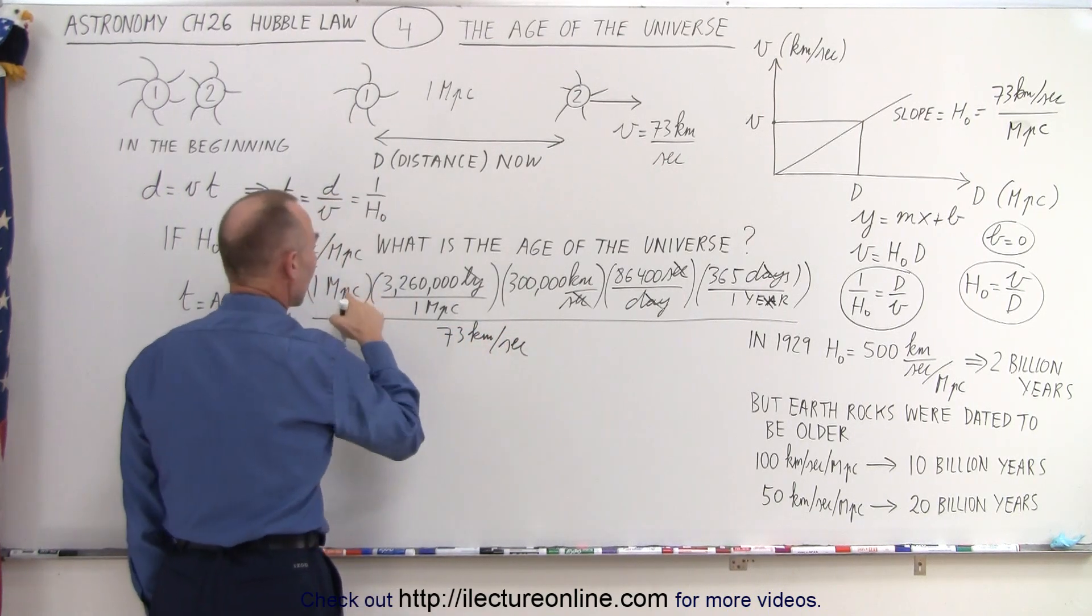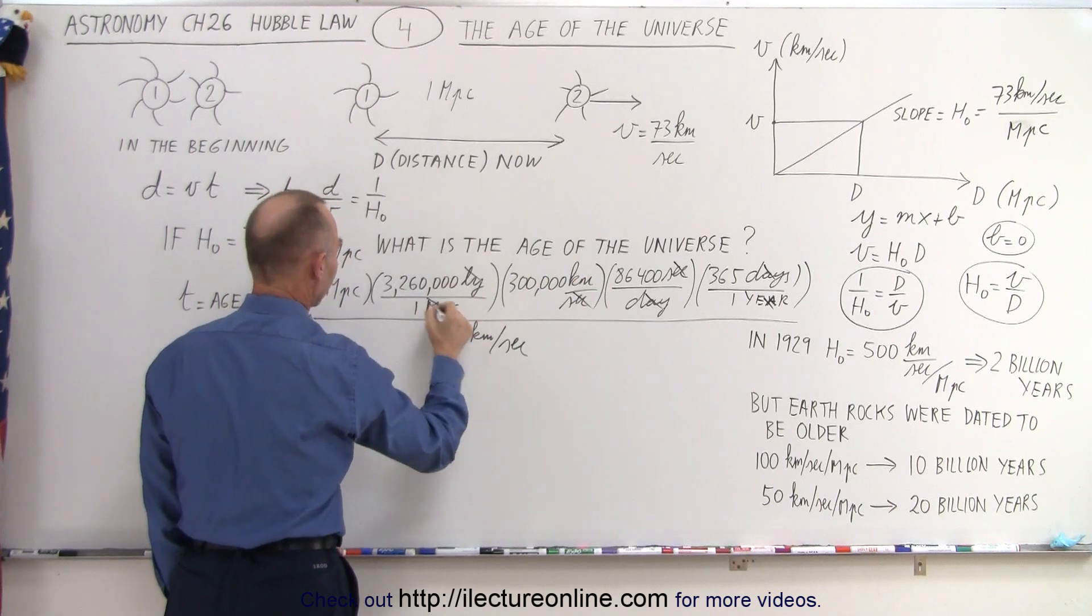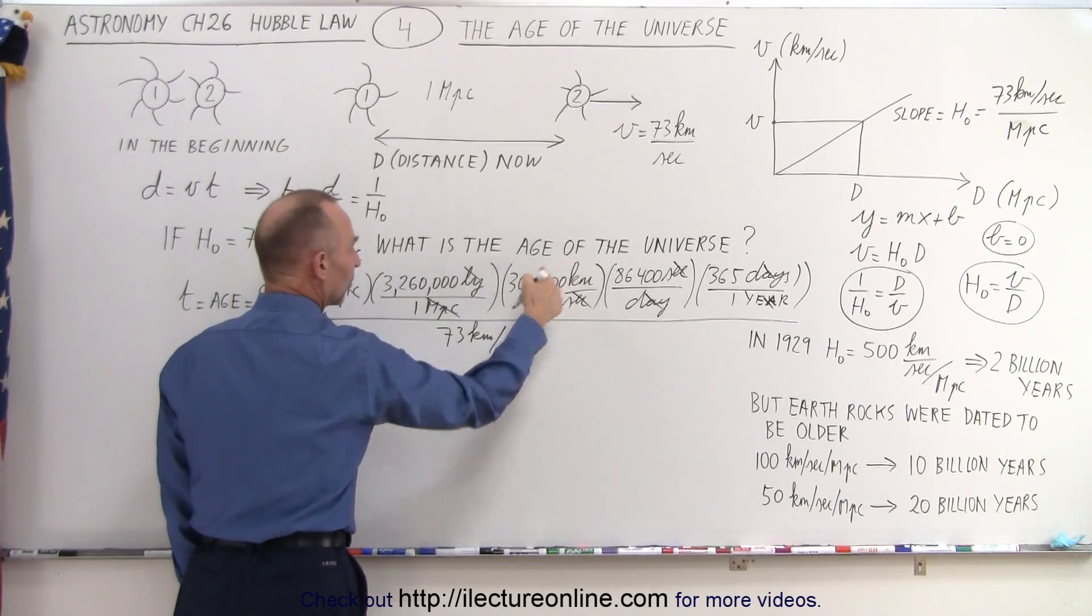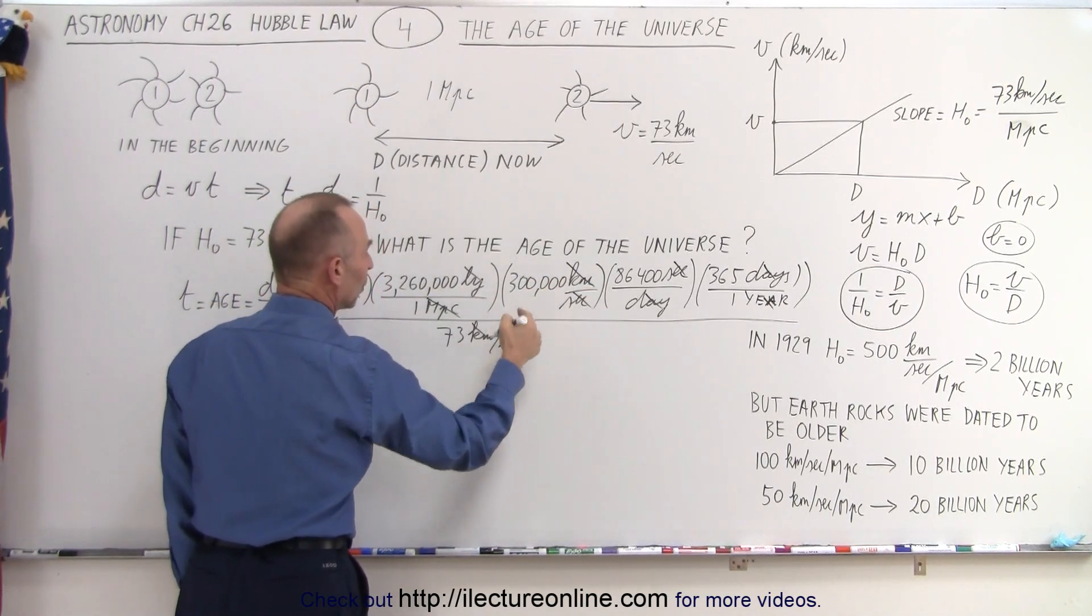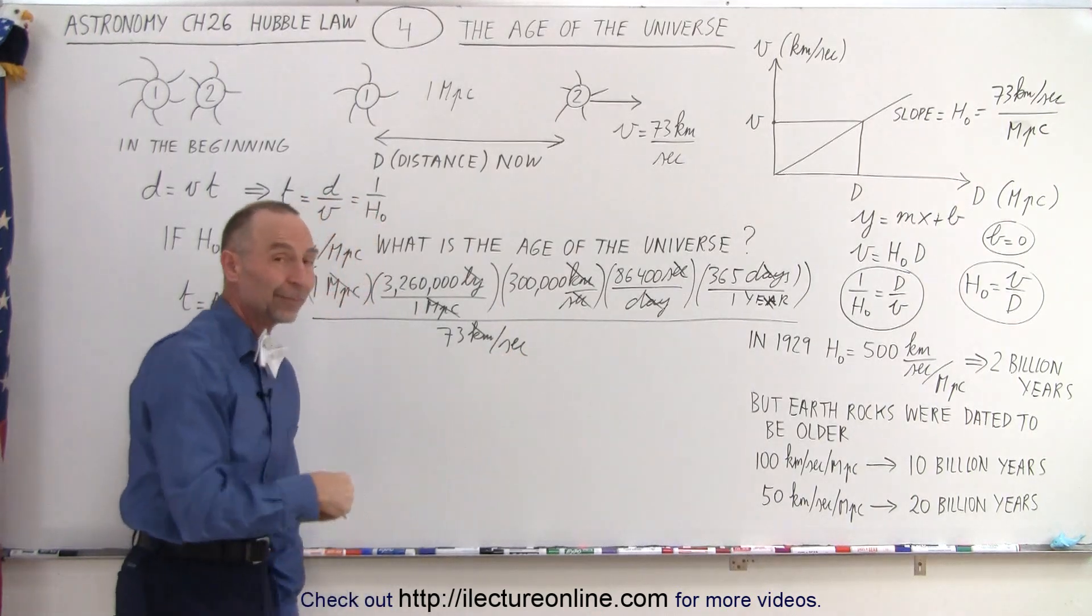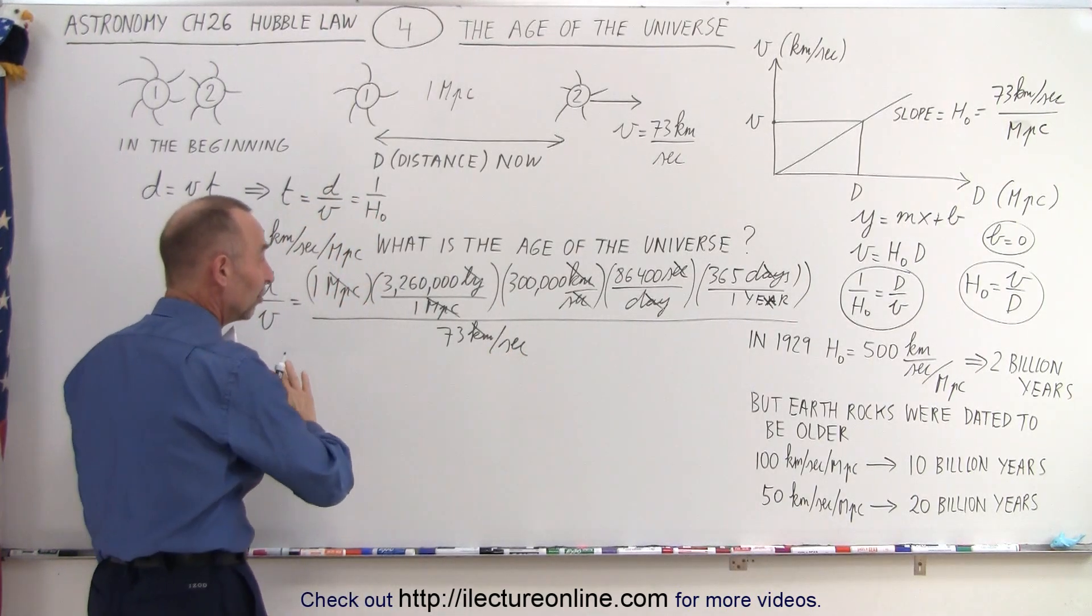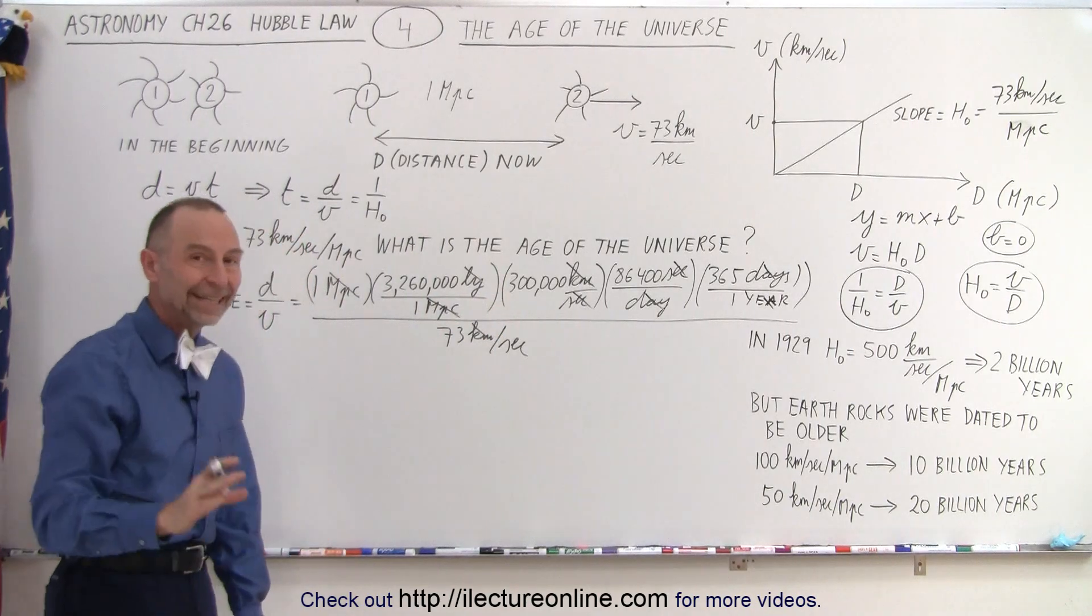That means that megaparsec cancel out megaparsecs. Kilometers will cancel out kilometers, and one over seconds in the denominator becomes seconds. So this will give us the age of the universe in seconds.